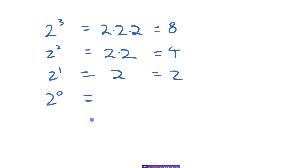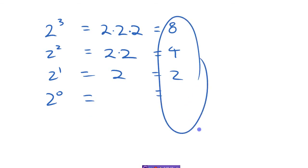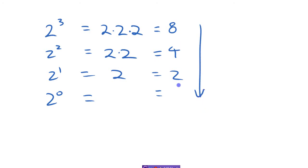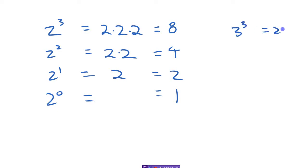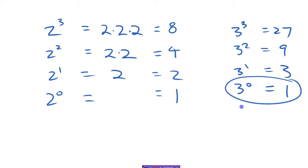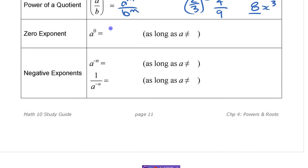Continuing down: what's happening to these numbers as you go down the list? You've got 8, 4, 2 — what should the next number be following the pattern? It should definitely be 1. I could have done this with any base. With 3s: 3 cubed is 27, 3 squared is 9, 3 to the 1 is 3, so 3 to the 0 should be 1. Anything to the 0 power is 1, no matter what base you're using.